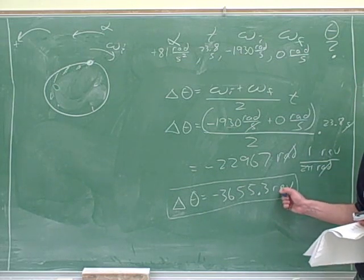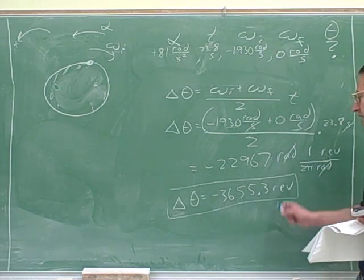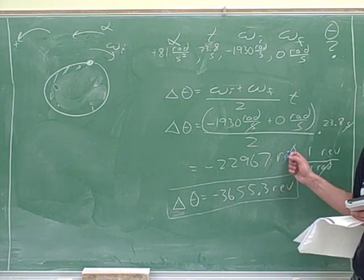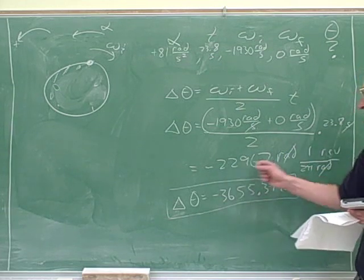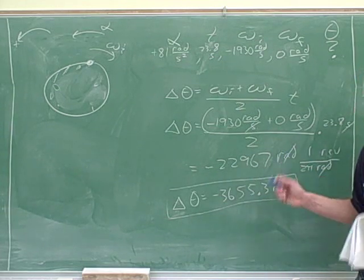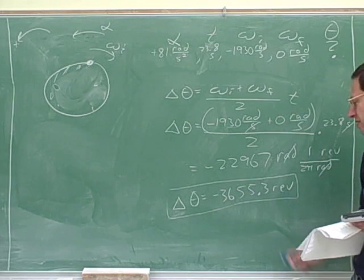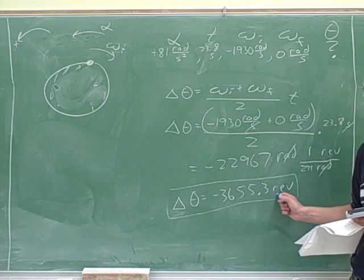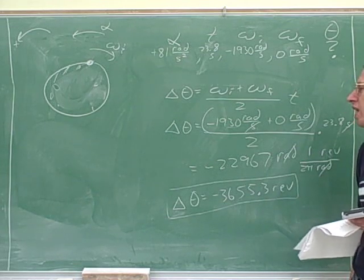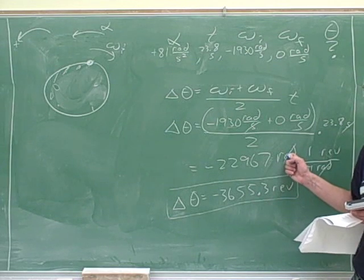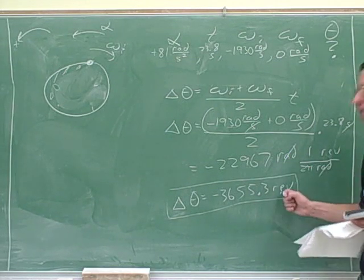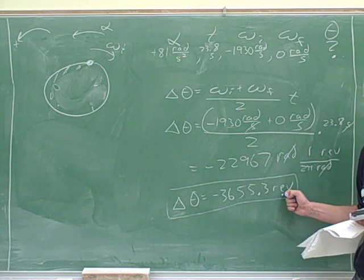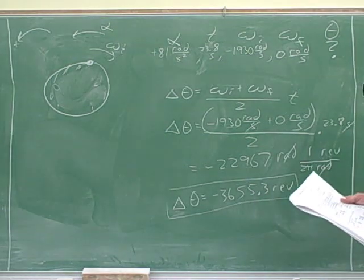A revolution is a complete rotation. You can see how this is more useful for practical purposes than radians. I don't really know how to interpret 22,000 radians because I don't have a good intuition for what a radian is, but I understand what a revolution is. Unfortunately, oftentimes many equations work better in radians. So you use the equation in radians, and then to make the answer interpretable, you put that into revolutions, which makes more practical sense.